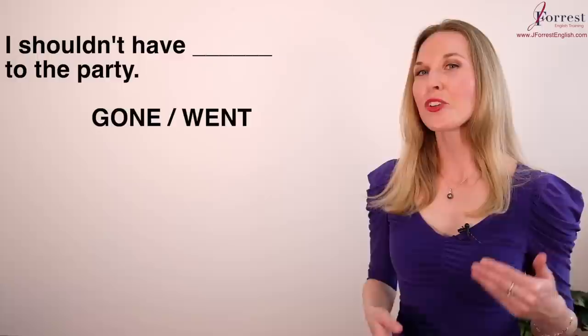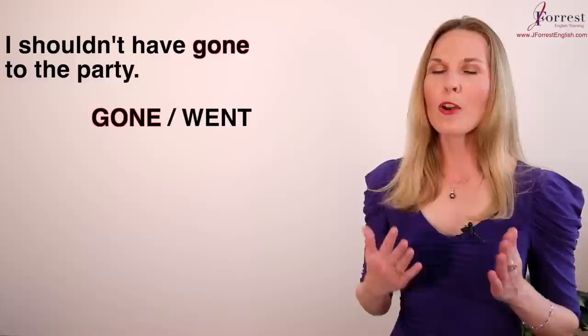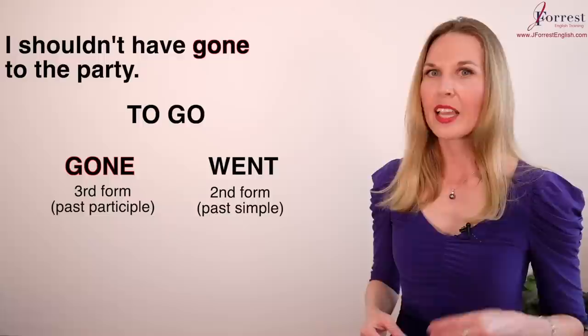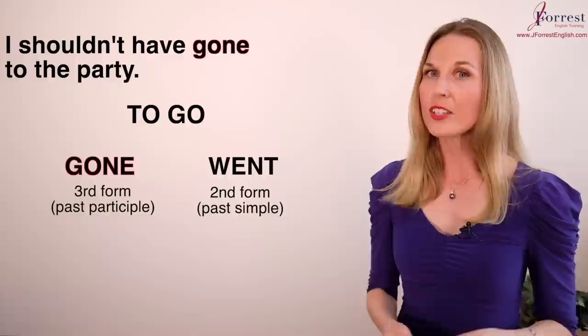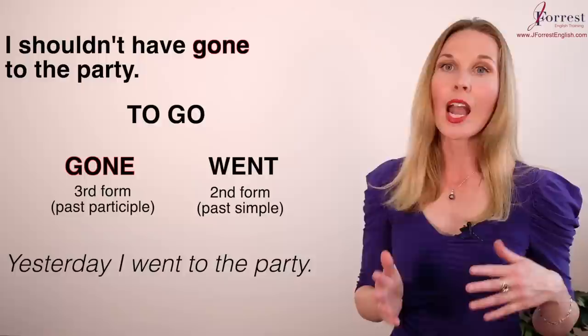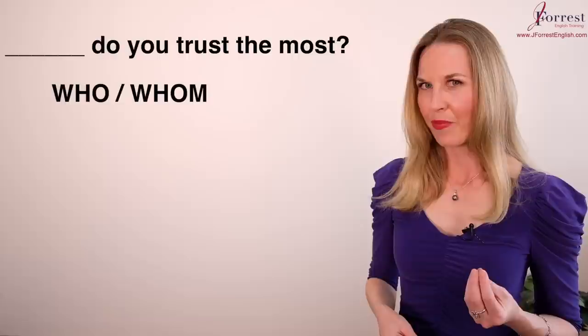Number fourteen: I shouldn't have gone to the party. Our verb is 'go'. The past simple is 'went' and the past participle is 'gone'. This structure requires the past participle — the third form of the verb: yesterday I went to the party; I've gone to three parties this month. And finally, number fifteen: Whom do you trust the most?